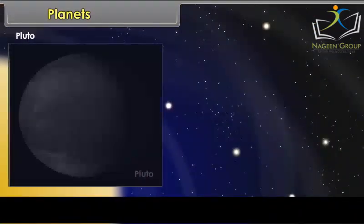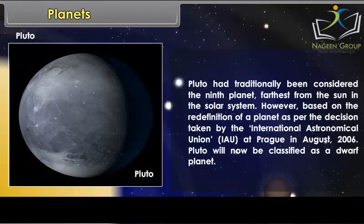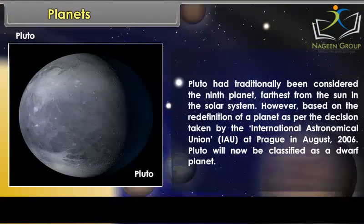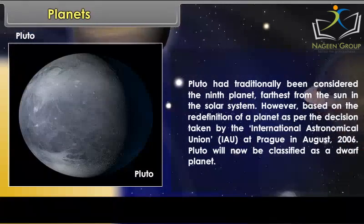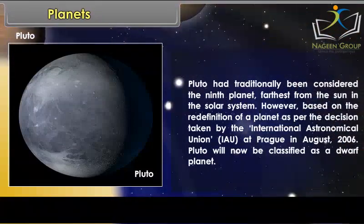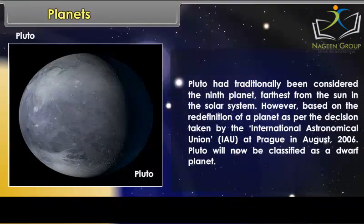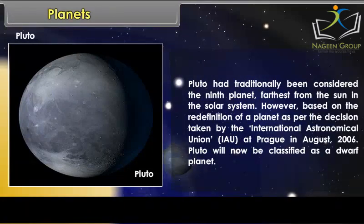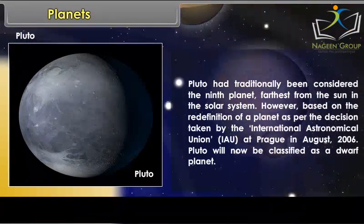Pluto had traditionally been considered the ninth planet, farthest from the Sun in the solar system. However, based on the redefinition of a planet, as per the decision taken by the International Astronomical Union (IAU) at Prague in August 2006, Pluto is now classified as a dwarf planet.